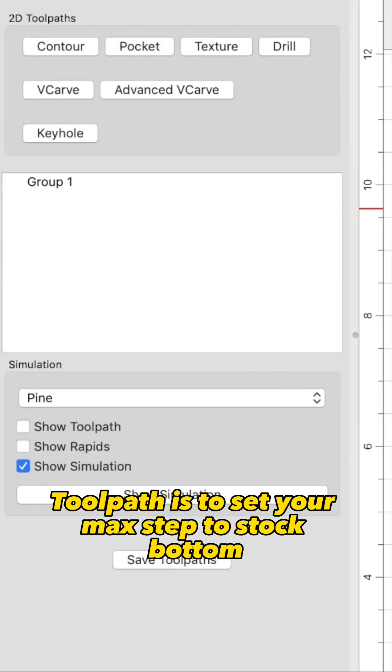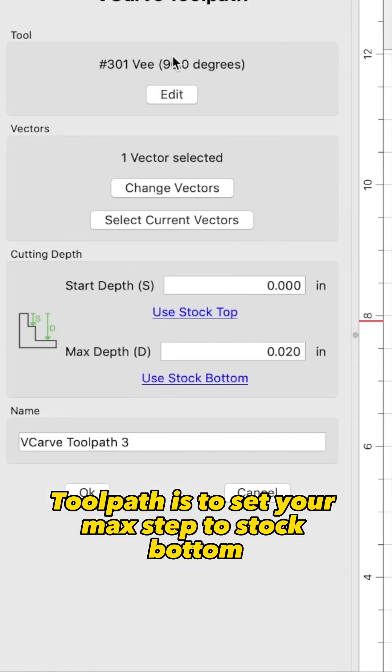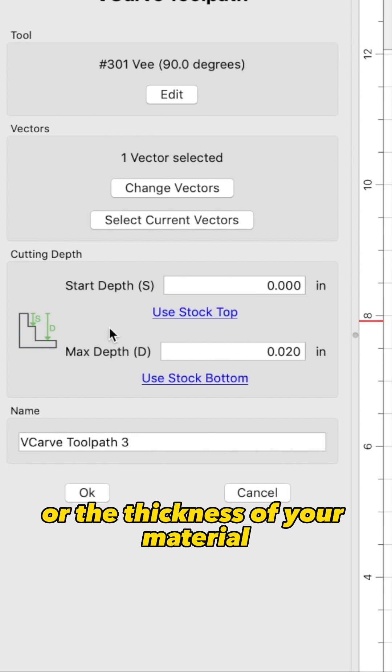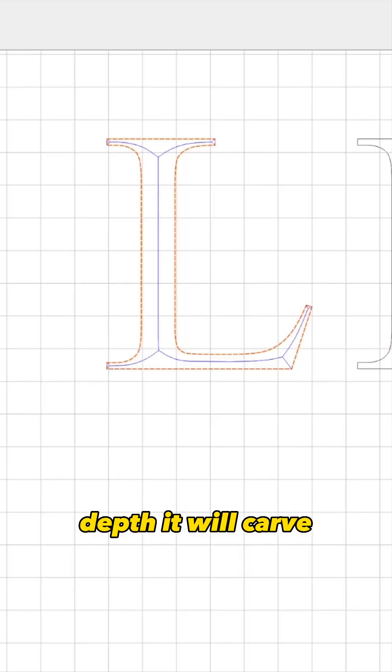The general rule of thumb when setting up a v-carve toolpath is to set your max depth to stock bottom, or the thickness of your material. This allows the program to determine the max depth it will carve.